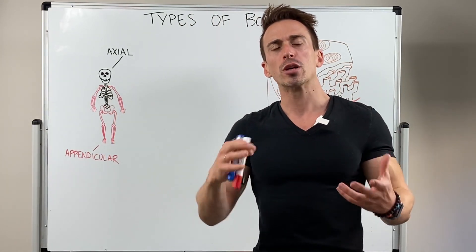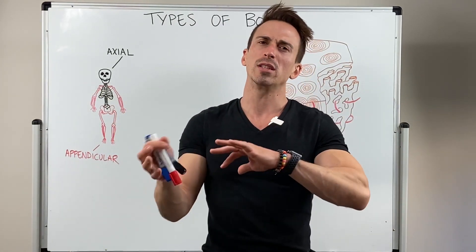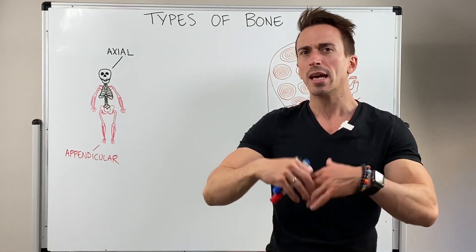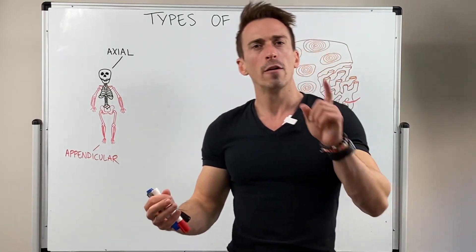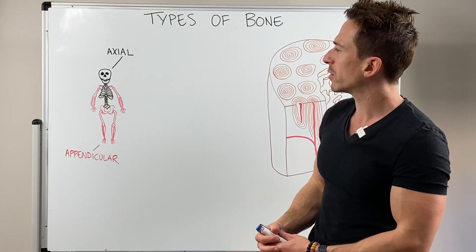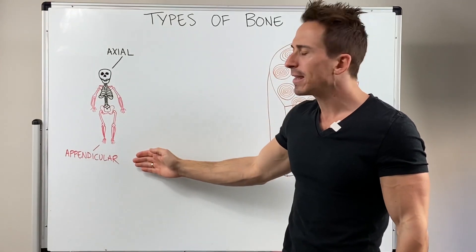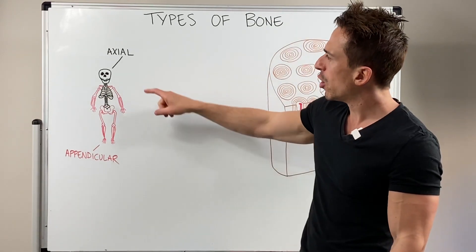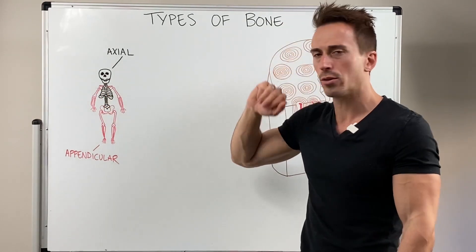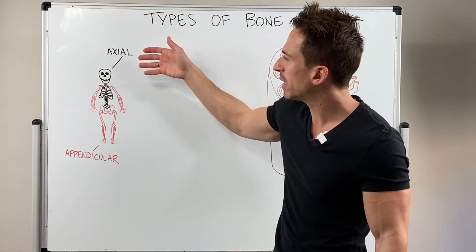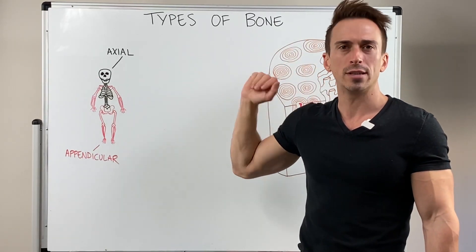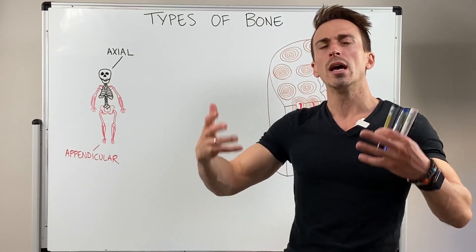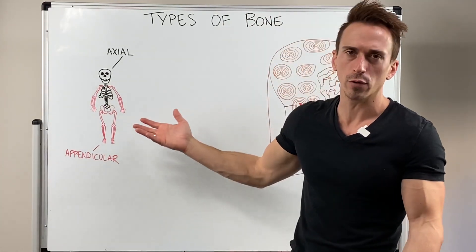When we look at the skeletal system, you can divide it in a number of different ways and categorize the bones a number of different ways as well. The first way is dividing the skeletal system into what we call the axial skeleton and the appendicular skeleton. I've drawn up my little skeleton here and highlighted different colours. All those bones in black are the axial skeleton — basically the skull, the rib cage, the sternum, and the vertebral column. The appendicular skeleton is everything else, basically everything that holds and moves the limbs.